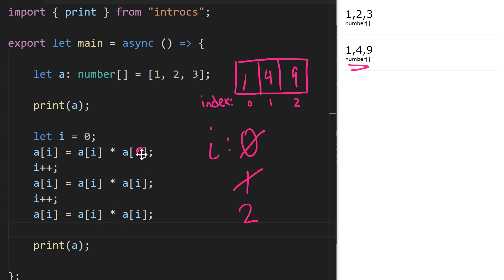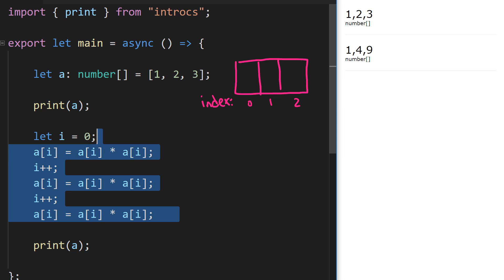Notice there's a lot of repetition here. This pattern — take `a[i]`, multiply it by itself, assign it back to `a[i]`, then increment `i` — repeats over and over. Because this exact same set of code is repeating, there's something even more clever we can do: we can introduce a loop to cause this repetition to happen programmatically. Let's rewrite our program to do that.